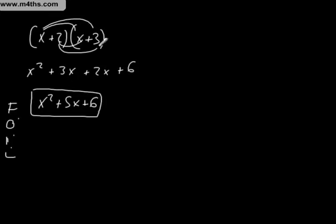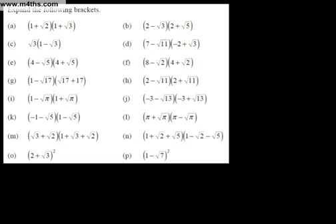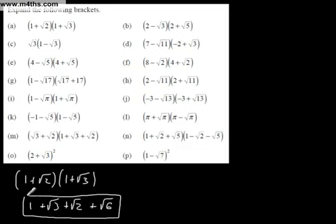There's no difference with surds. Let's FOIL (1 + √2)(1 + √3). 1 times 1 is 1; 1 times √3 is plus √3; 1 times √2 is √2; and then √2 times √3 is plus √6 — since 2 times 3 is 6, giving √6. That is as expanded as possible. We can't add these — they're not like surds, since 2 and 3 are both prime numbers.